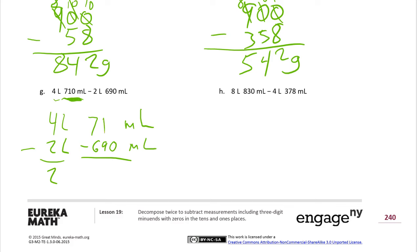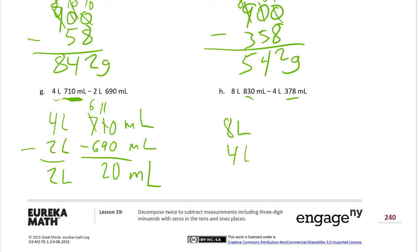Starting over: the zeros don't need attention here. I unbundle one of these hundreds and get 11 tens. Now I subtract: 11 tens minus 9 tens is 2 tens. That gives us the 20 milliliters I knew we'd have from the beginning. Don't forget the units: 2 liters, 20 milliliters.